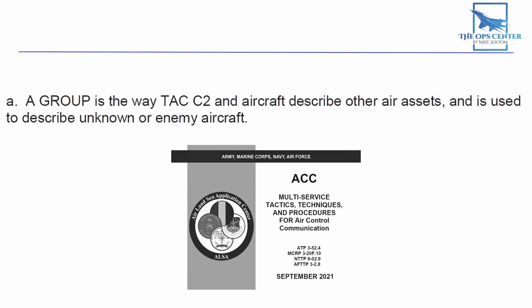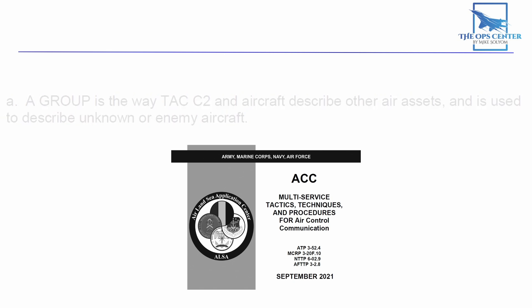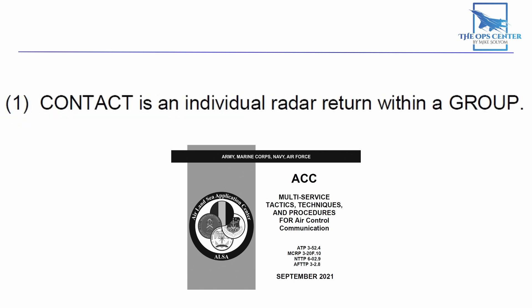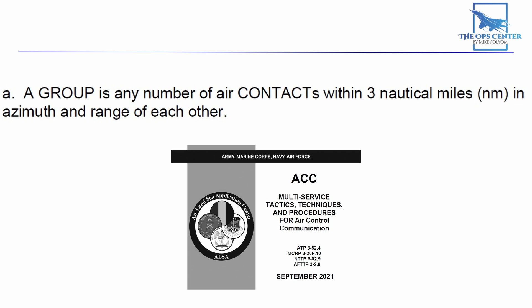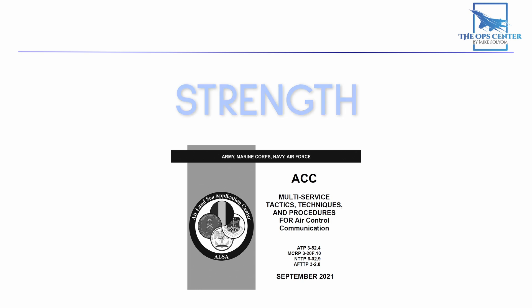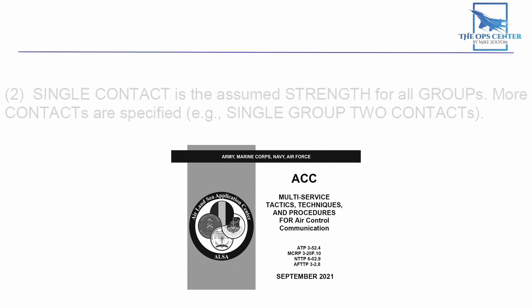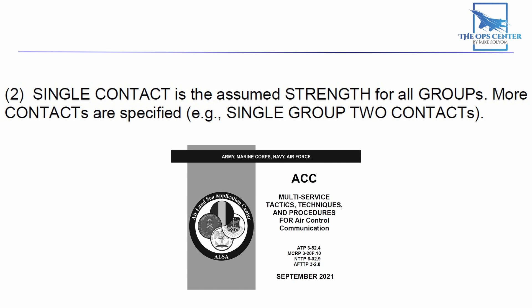A group is the way TAC C-2 and aircraft describe other air assets, and is used to describe unknown or enemy aircraft. Groups are made up of contacts, which are individual radar returns. Contacts are considered part of the same group when they are within three nautical miles of each other. The number of contacts in a group is called its strength.